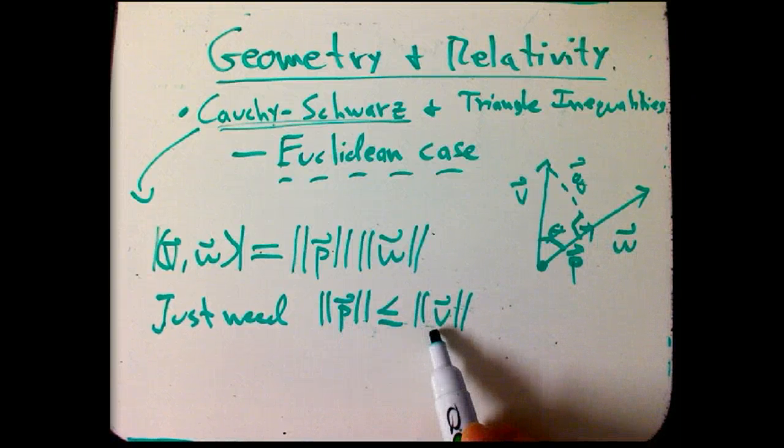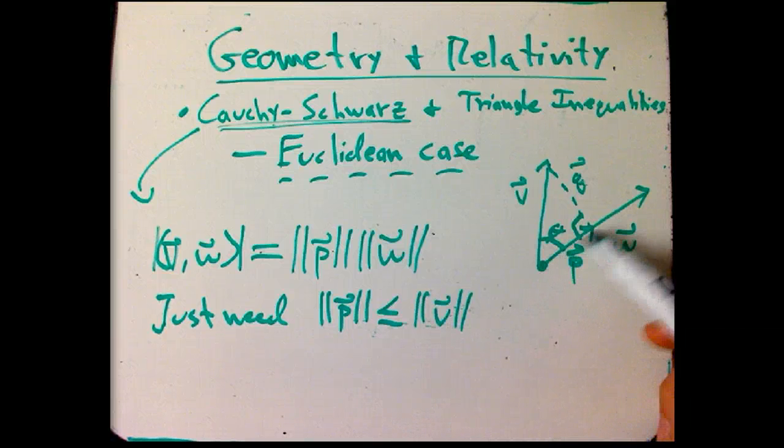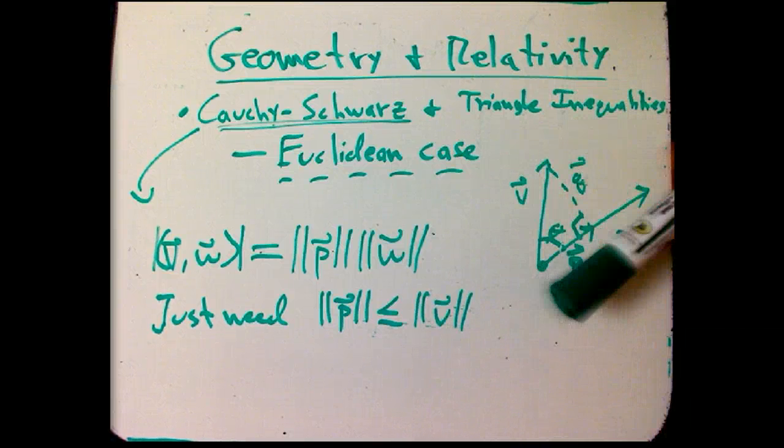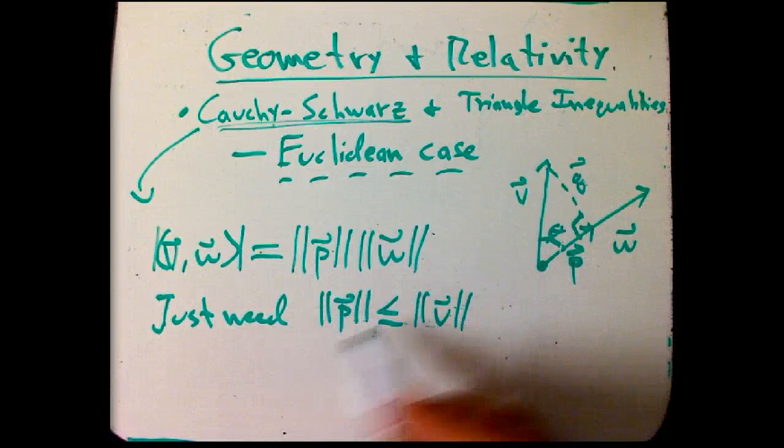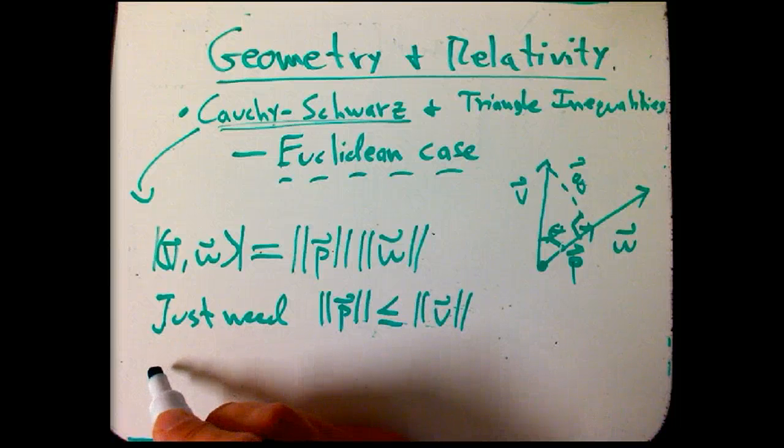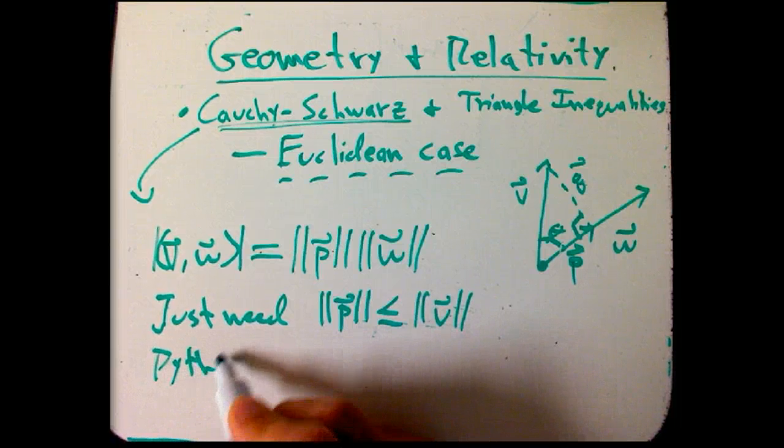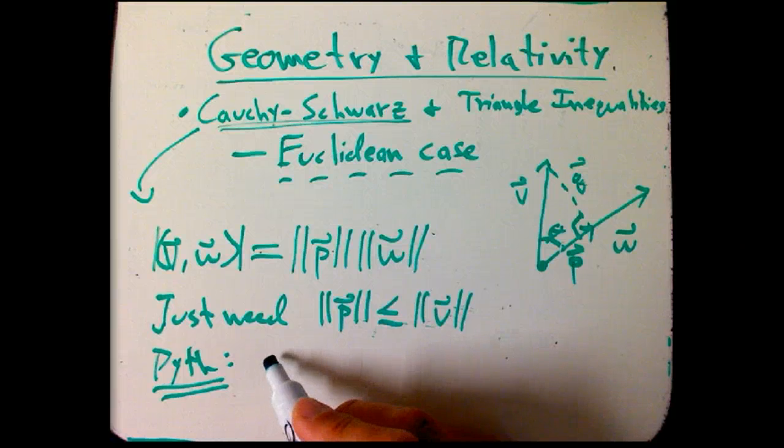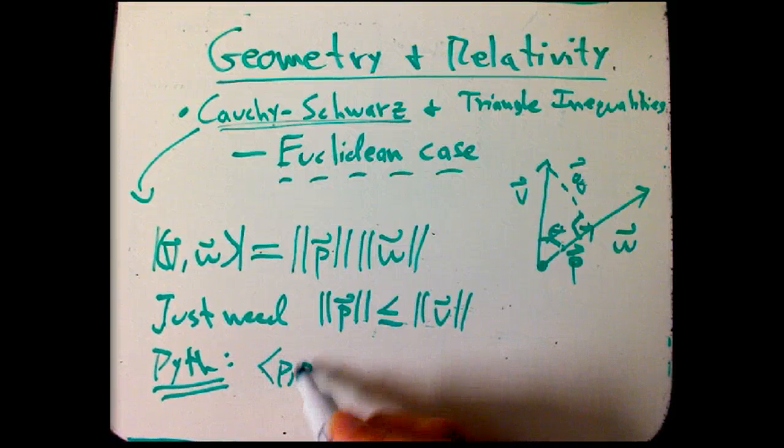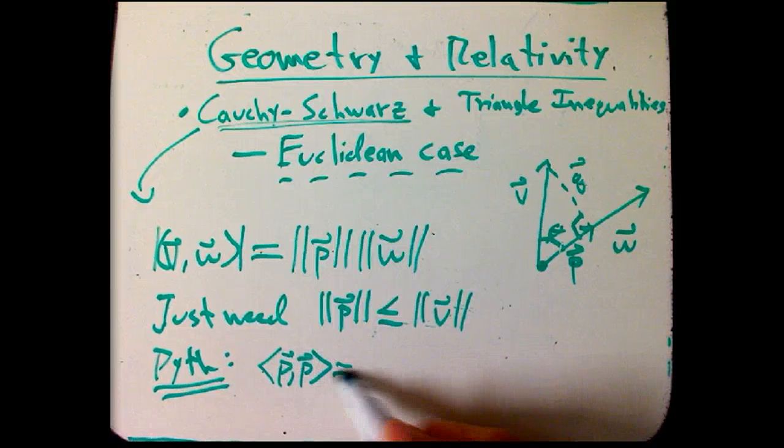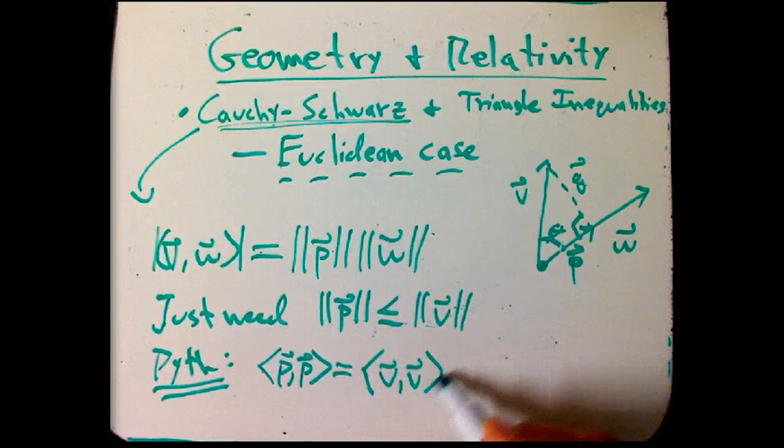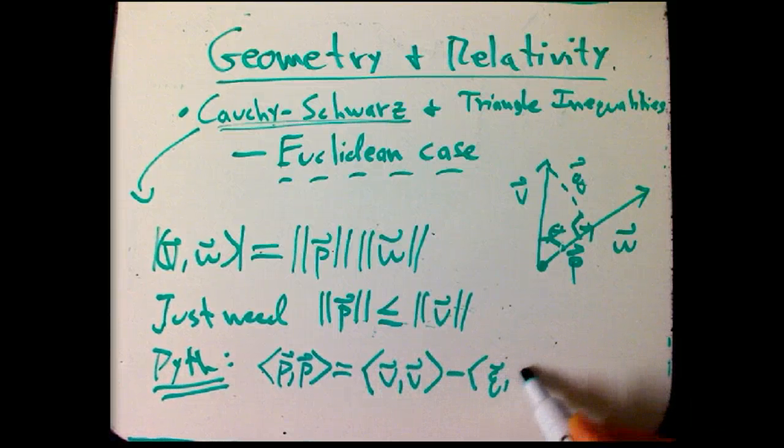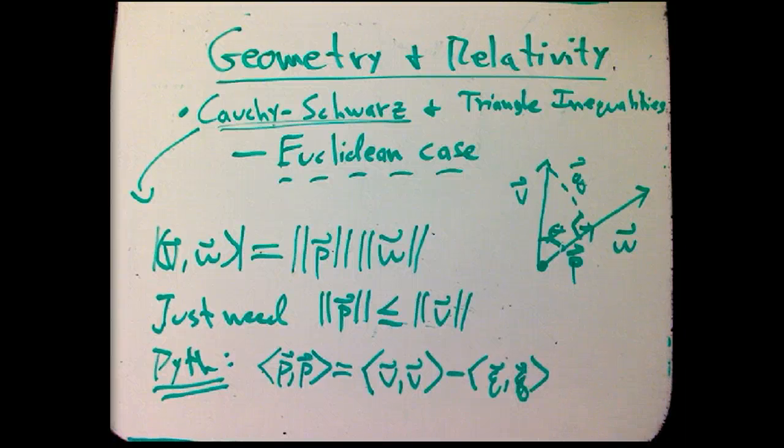Now let's see, when is this going to be equal? It looks like, again, when this leg is the hypotenuse, when V is actually in the direction of W. So that makes sense. So why would this be true? Well, we're just going to write down something else we found, and that's just Pythagoras. Which is, the squared magnitude of P, which is the dot product of it with itself, was that's the hypotenuse squared minus the other leg squared.